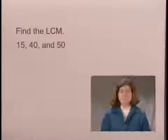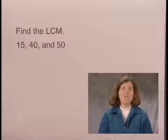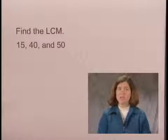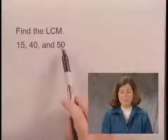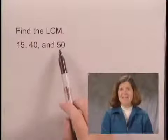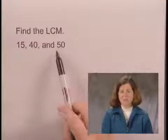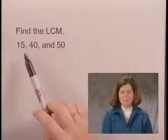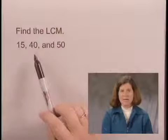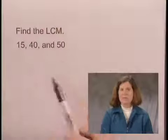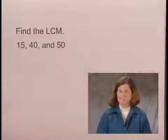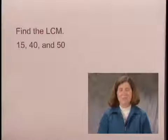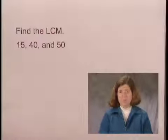The first thing to check before starting in on a procedure to find the least common multiple is the largest number, 50. Is it a multiple of the other two numbers, 15 and 40? It is not. If it is, then you don't have to do any more work. But in this case it's not, so we need to go through a procedure.